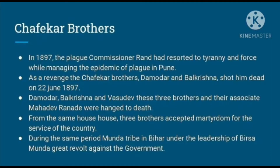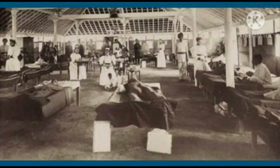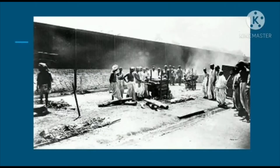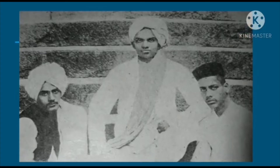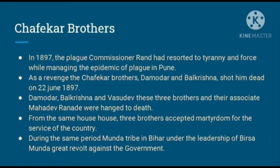Now let us talk about the Chafekar brothers. In 1897, Plague Commissioner Rand resorted to tyranny and force while managing the epidemic of plague in Pune. Tyranny means cruel treatment meted out by the government. Commissioner Rand was appointed to manage the epidemic but did not undertake the work properly, due to which many people died. As revenge, the Chafekar brothers Damodar and Bal Krishna shot Commissioner Rand, and he died on 22nd June 1897. Damodar, Bal Krishna, and Vasudev — three brothers — along with their associate Mahadev Ranade were hanged to death. This martyrdom became a great inspiration for the people of India.